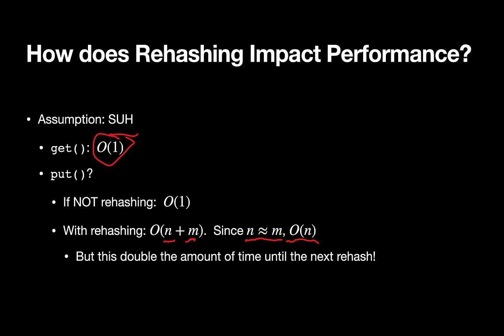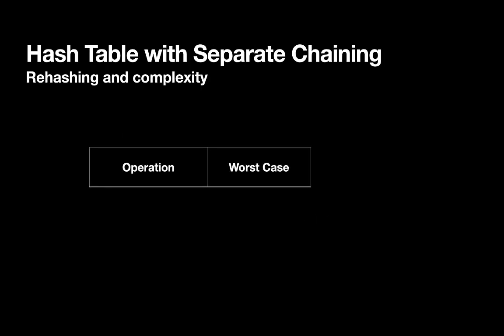But every once in a while, the true worst case will actually be order n. So on average, it'll end up being close to constant time. But every once in a while, there will be a long amount of time to go through the rehash process.